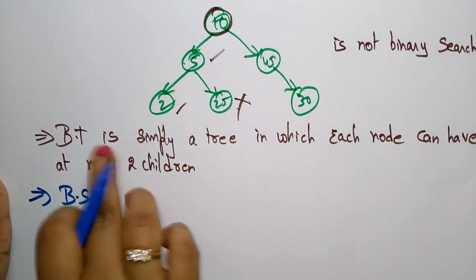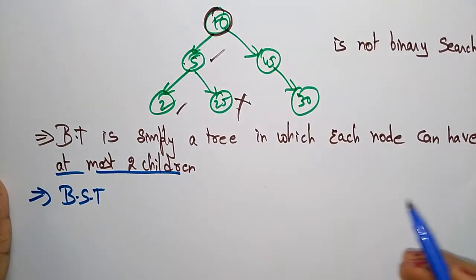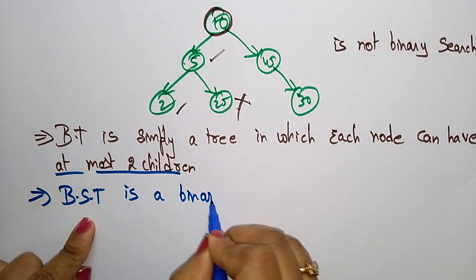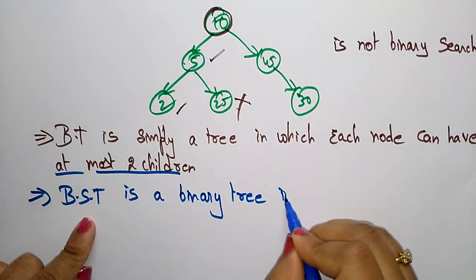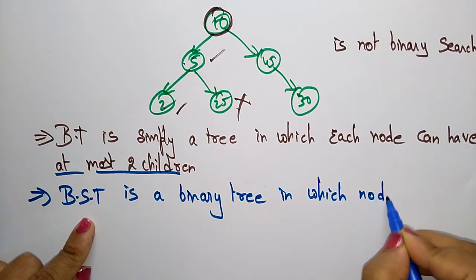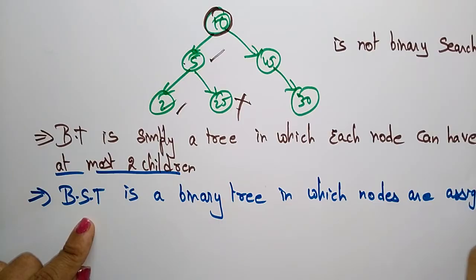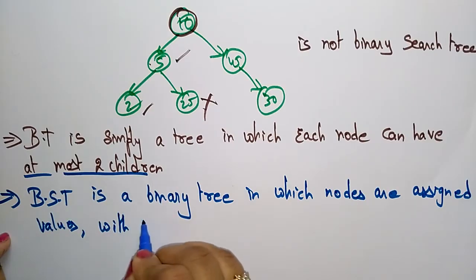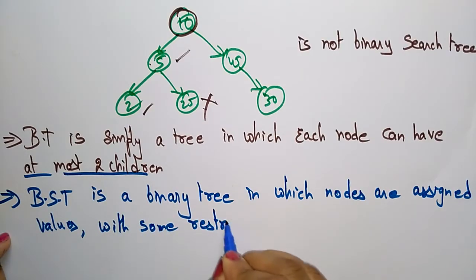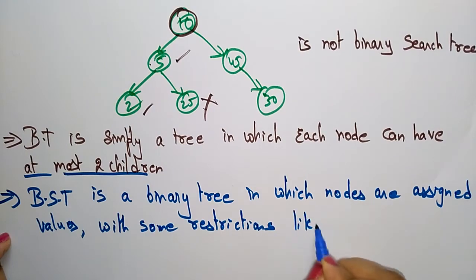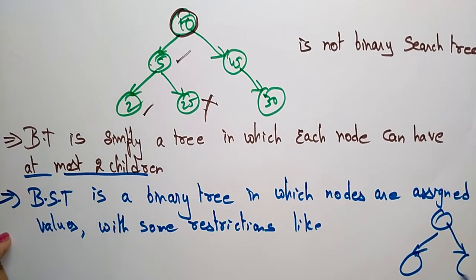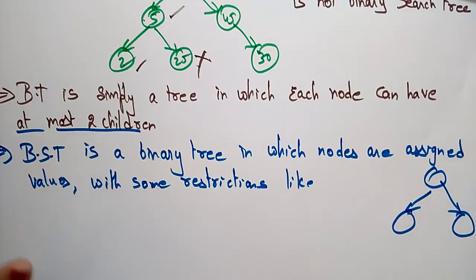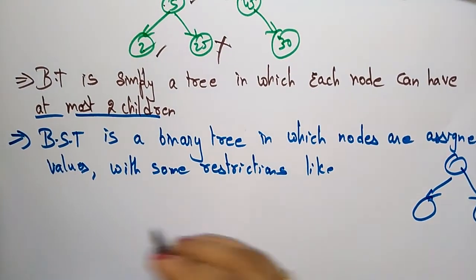Now coming to the binary search tree — for a binary tree the condition is at most two children. For a binary search tree, it is also a binary tree, but some additional conditions apply in which nodes are assigned values with some restrictions. The nodes will be present in the tree, and you have to insert the values with those restrictions.